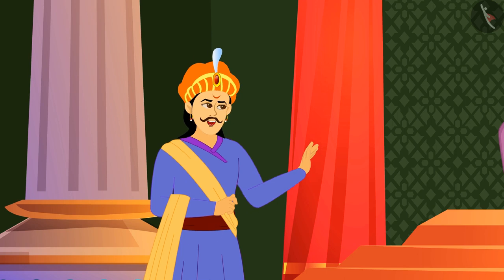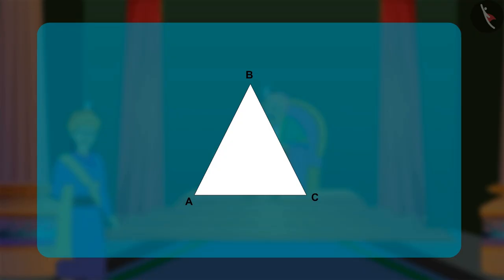Let me show you, said Birbal. He first bisects the three sides of a given triangle. He then folds the lines from the midpoints of each side to the opposite vertex.